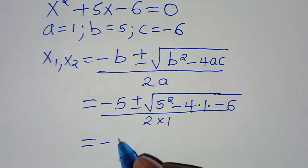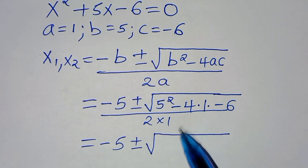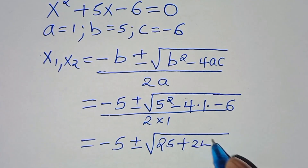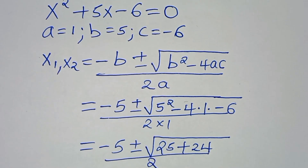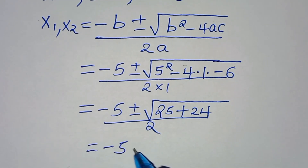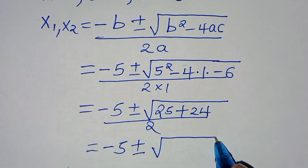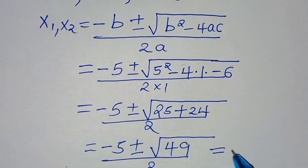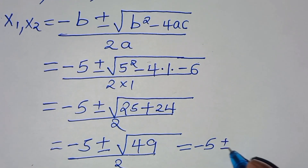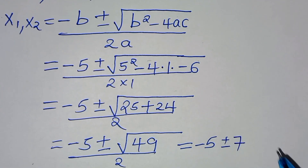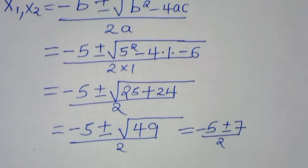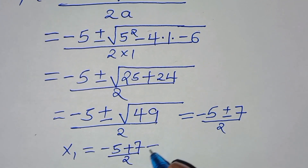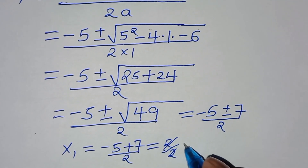So we have x = (-5 ± √(25 - 4×1×(-6))) / 2 = (-5 ± √(25+24)) / 2 = (-5 ± √49) / 2 = (-5 ± 7) / 2.